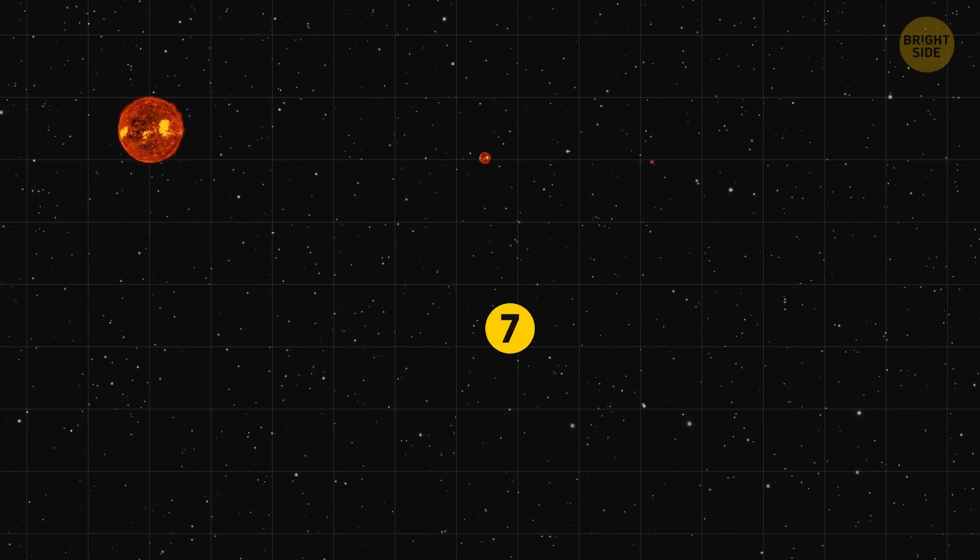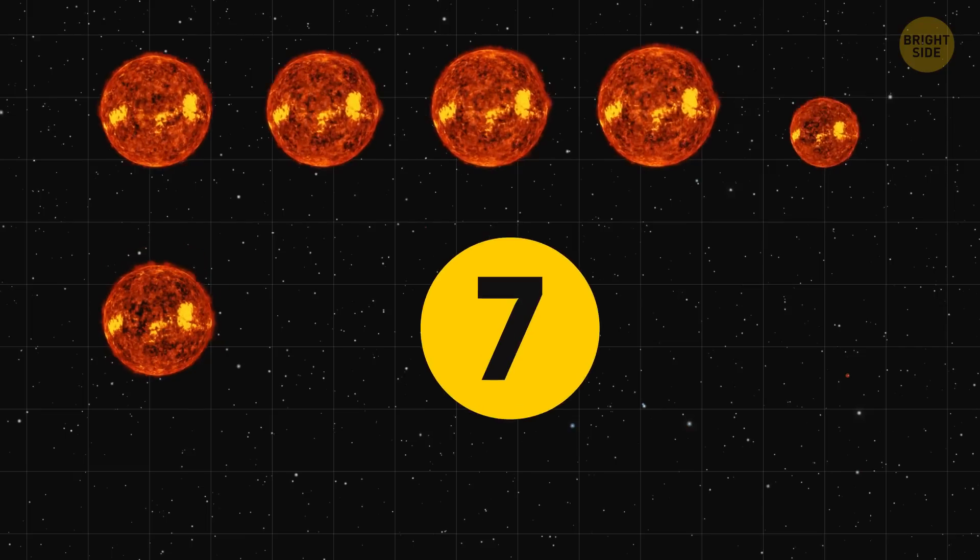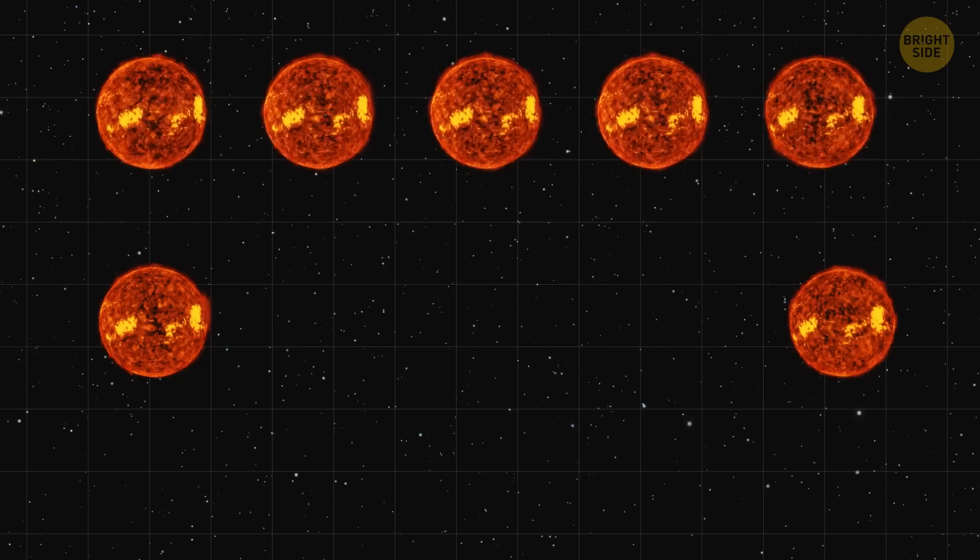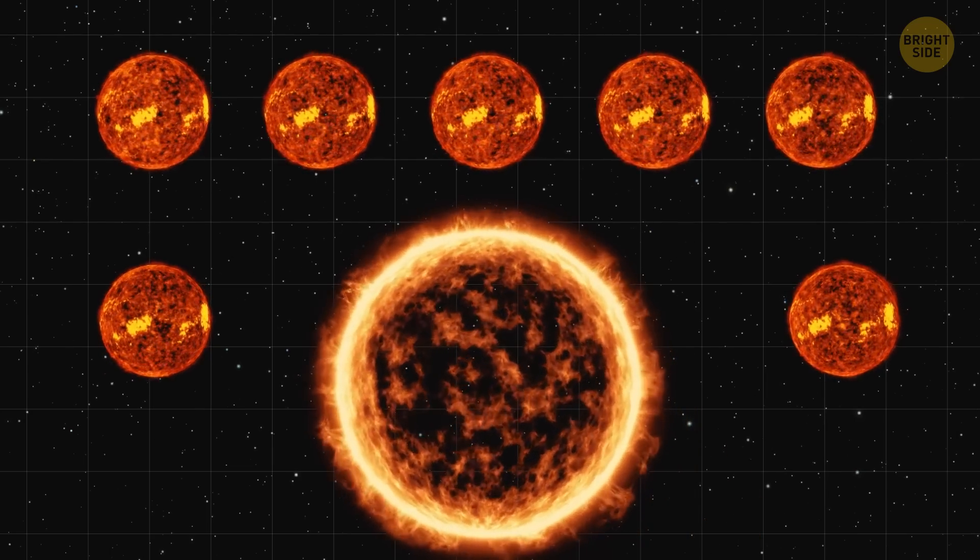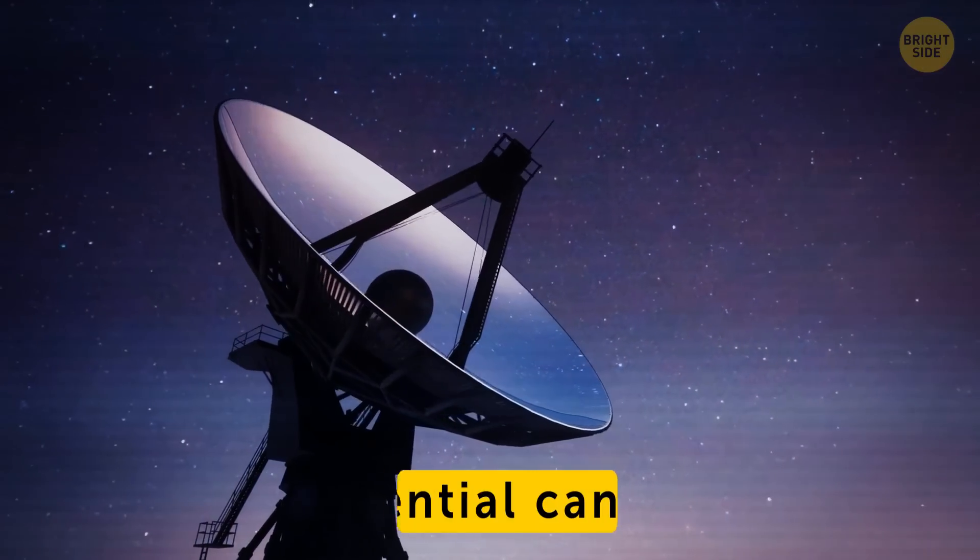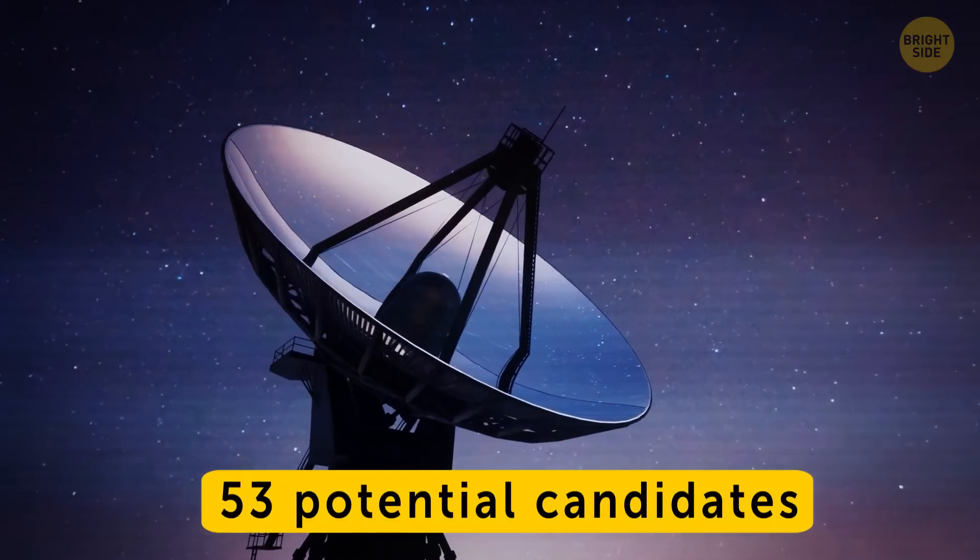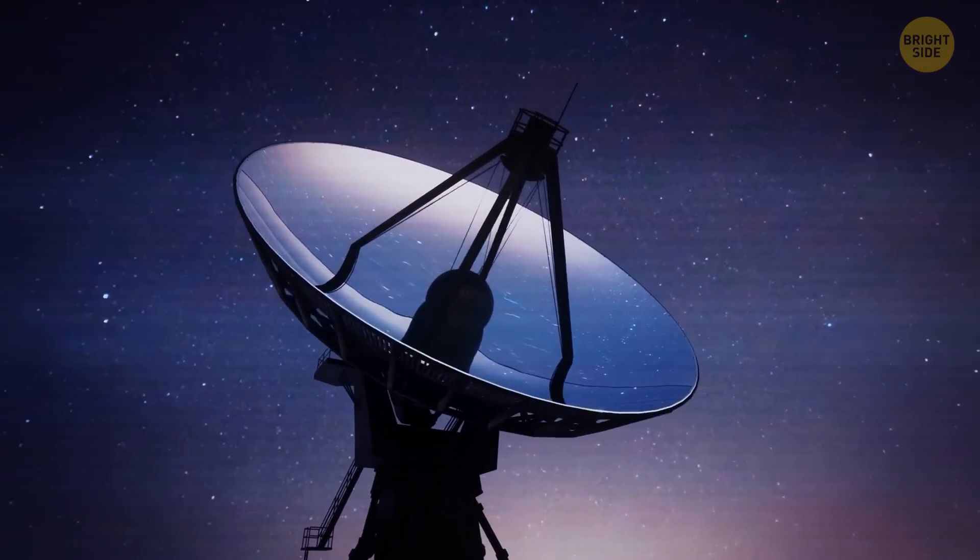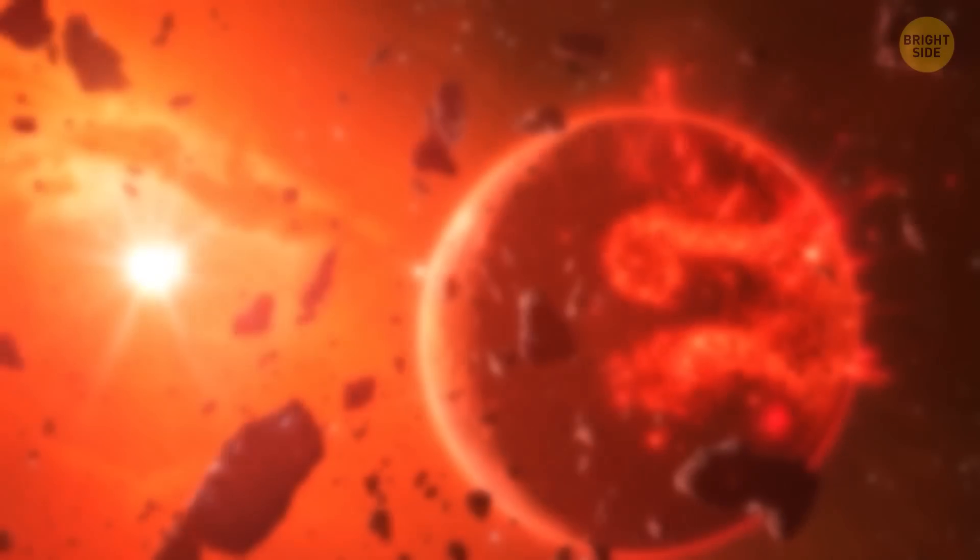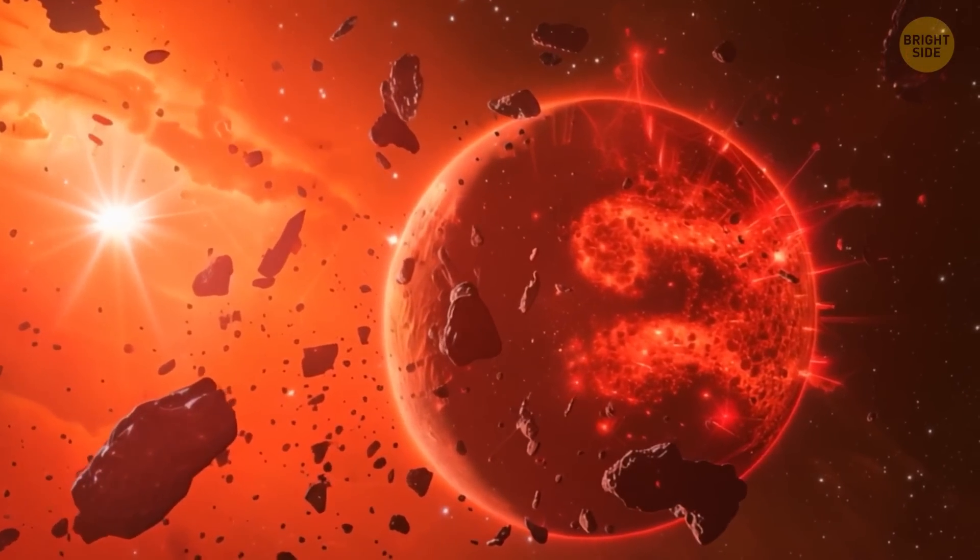In total, there are seven such candidates right now. All of them are coming from red dwarf stars, which are redder, smaller, and less massive than the Sun. Another research institute found 53 potential candidates. They're still not sure what exactly causes these signals, but it could be not Dyson spheres, but some huge debris.